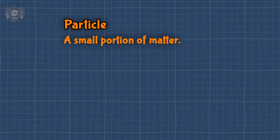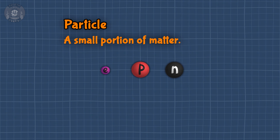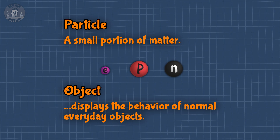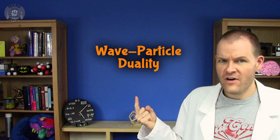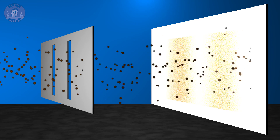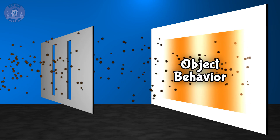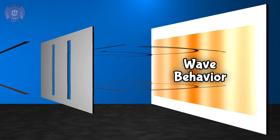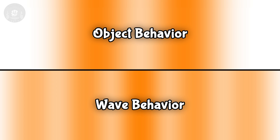But the 'particle' in wave-particle duality is saying much more than that. It implies that those small portions of matter — those electrons, protons, and neutrons — also exhibit exactly the same behavior as normal objects. For clarity, let's call this an 'object' instead of a particle, so we'll call it wave-object duality instead. The justification for this idea usually comes from the double slit experiment. Say you've got two walls, but the one in front has two openings. If you launch a bunch of paint balls at the first wall, a pattern develops on the second wall — we'll call this object behavior. If you do the same with sound, you get a very different pattern — we'll call this wave behavior.